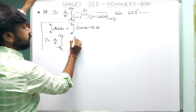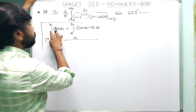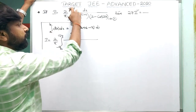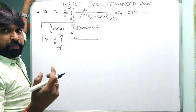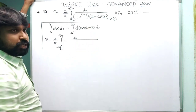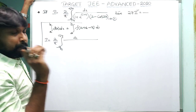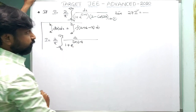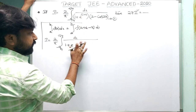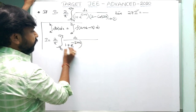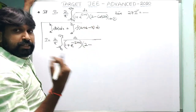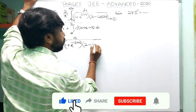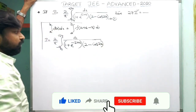Call the original integral equation 1. Applying the property, substitute x with (a+b−x): lower limit + upper limit = −π/4 + π/4 = 0, so substitute −x. With x replaced by −x: sin(−x) = −sinx, and cos(2×(−x)) = cos(2x) since cosine is even. This gives equation 2.